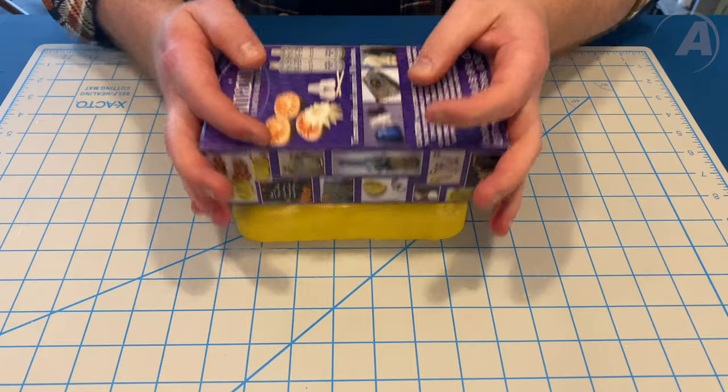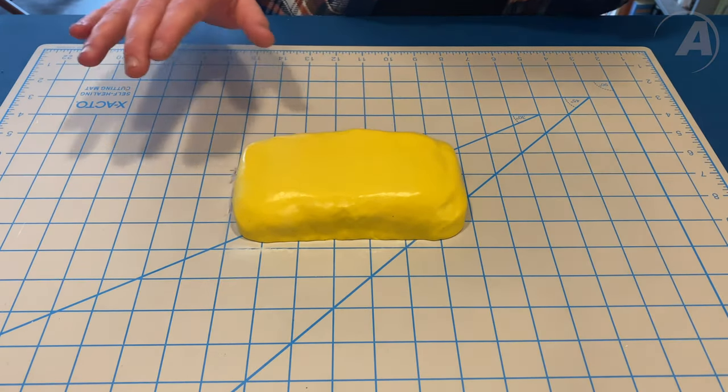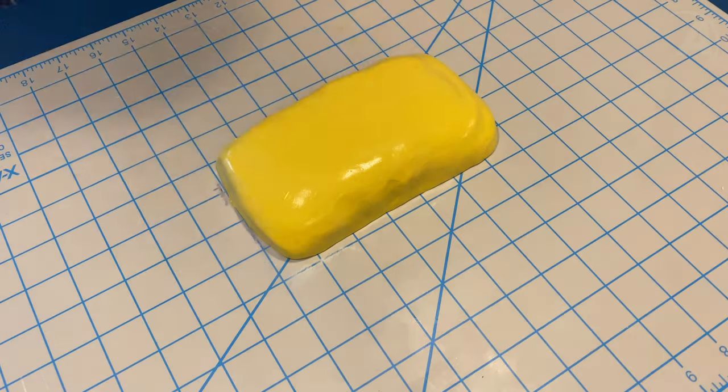I gently press a flat surface on top to make sure that when I'm pouring this mold later, I have a flat, stable surface. We'll let this sit for 20 minutes, and then it's time to demold.